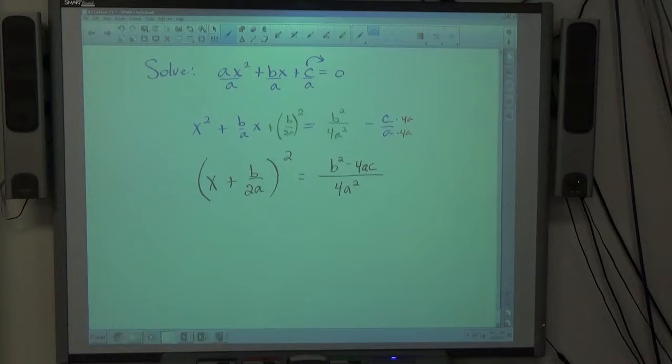On this side, if I add the like terms, or I should say add the fractions, 4a squared, common denominator. The bottom is just going to be 4a squared, and the top is going to be b squared minus 4ac.